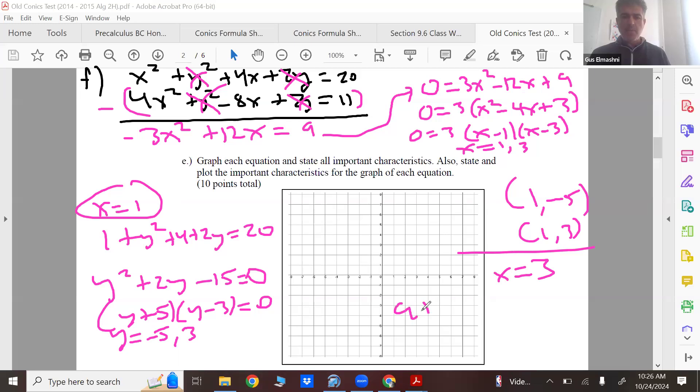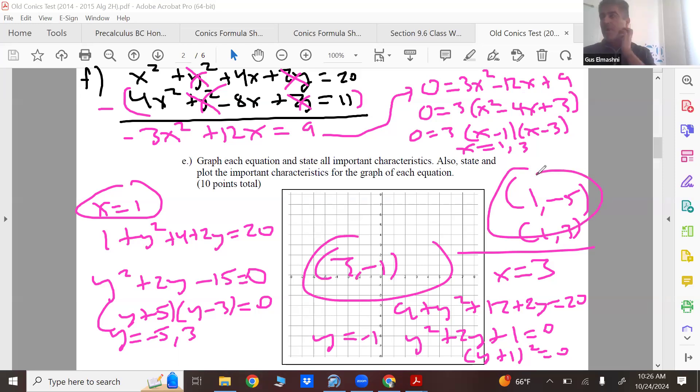And then also when x equals three, you should get nine plus y squared plus twelve plus two y equals twenty. Y squared plus two y plus one equals zero. So y equals negative one so you also have three comma negative one as another point.